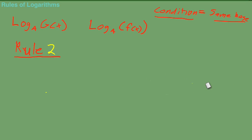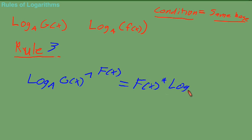Now we're going to go on to Rule 3. I always call this one the exponential rule - don't know what anybody else calls it. So if you have log base a of g(x) raised to the f(x), that equals f(x) times log base a of g(x).